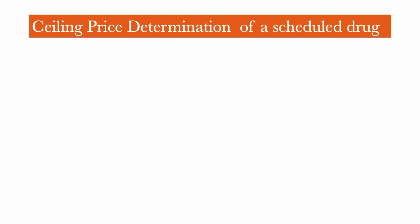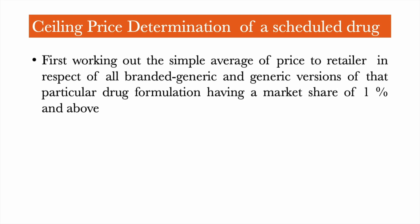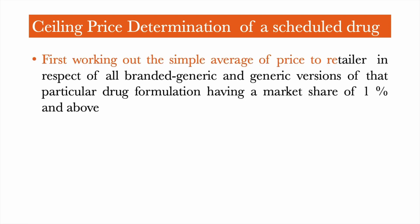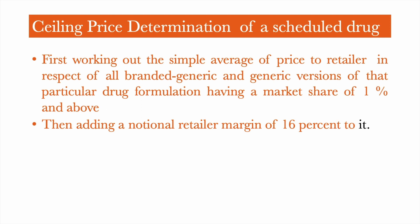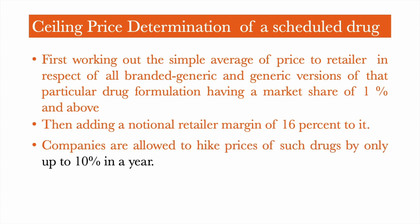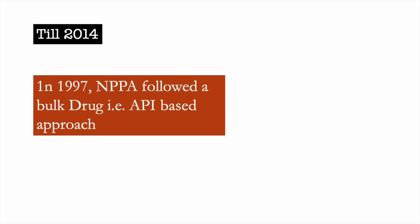Scheduled Drugs are those drugs which are part of the NPPA schedule. For their selling price, what NPPA does is take the simple average of price to retailers in respect of all branded generics and generic versions of that particular drug formulation having a market size of 1% and above. To this average price, they add a notional retailer margin of 16%, and that is fixed as the selling price for that Scheduled Drug. Another compulsion under Scheduled Drug pricing is that prices cannot be increased by more than 10% in a year. Until 2014, NPPA released their list on a bulk drug basis, and Scheduled Drugs were listed on an API basis — if the API is in the schedule, then all drugs containing it are called Scheduled Drugs.